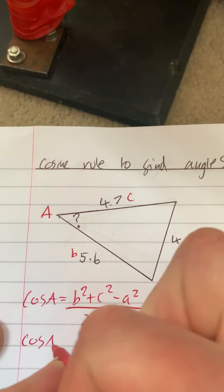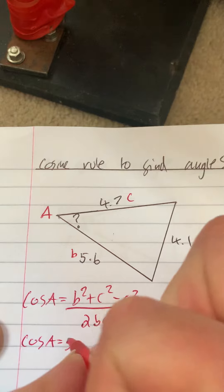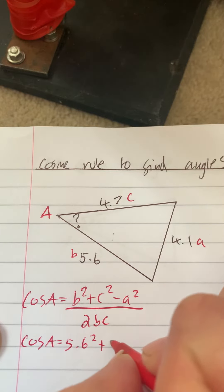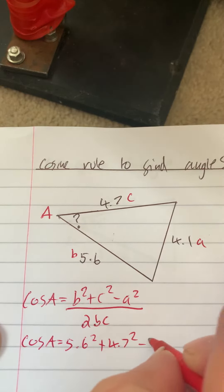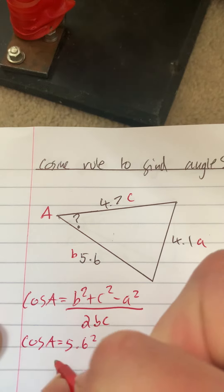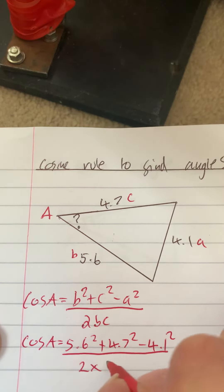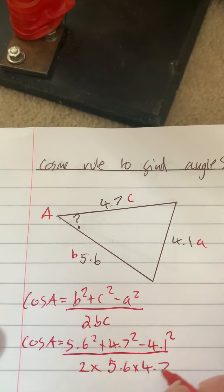So cos A is equal to b squared, which is 5.6 squared, plus c is 4.7 squared, minus a is 4.1 squared, all over 2 times 5.6 times 4.7.